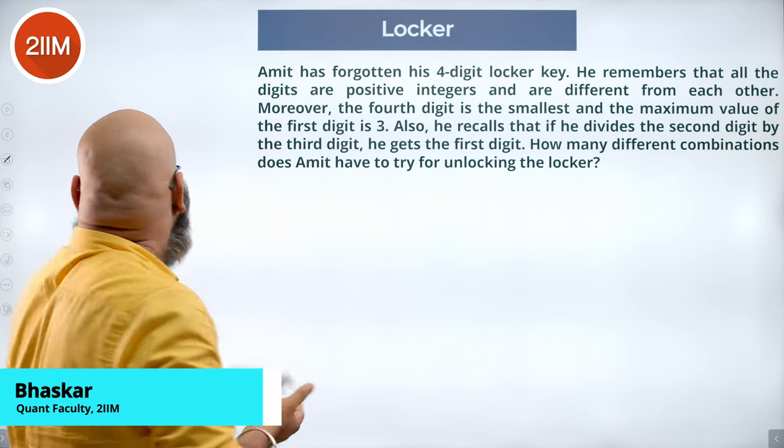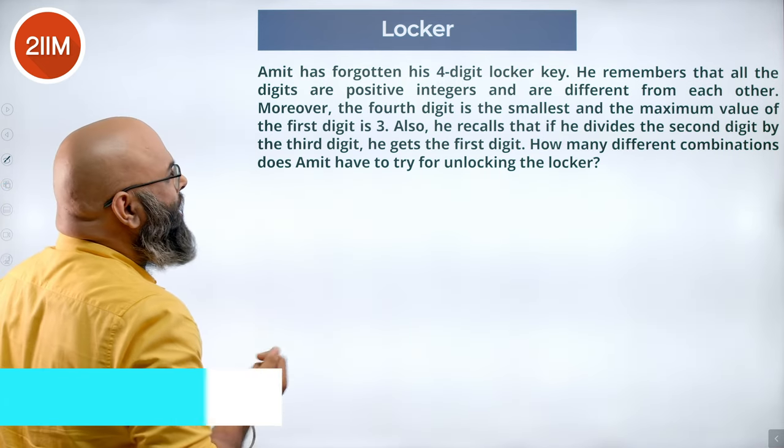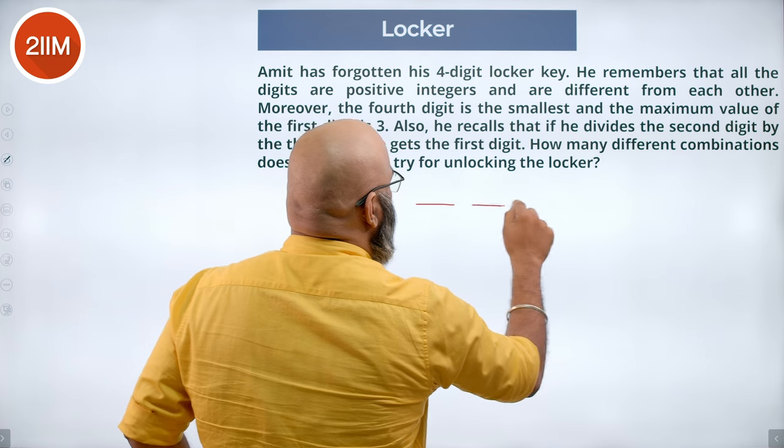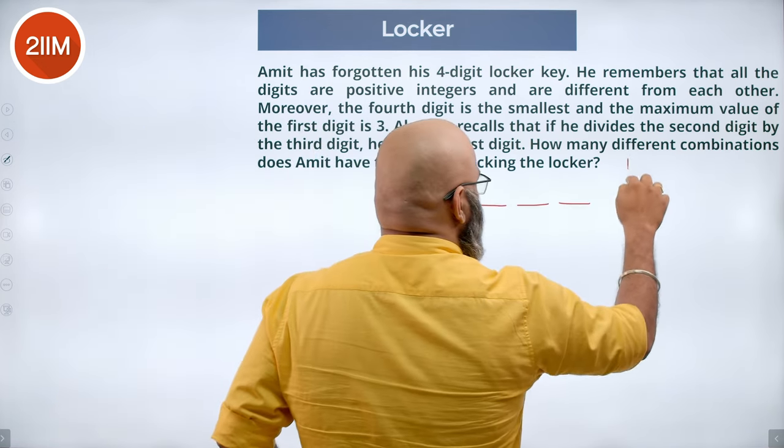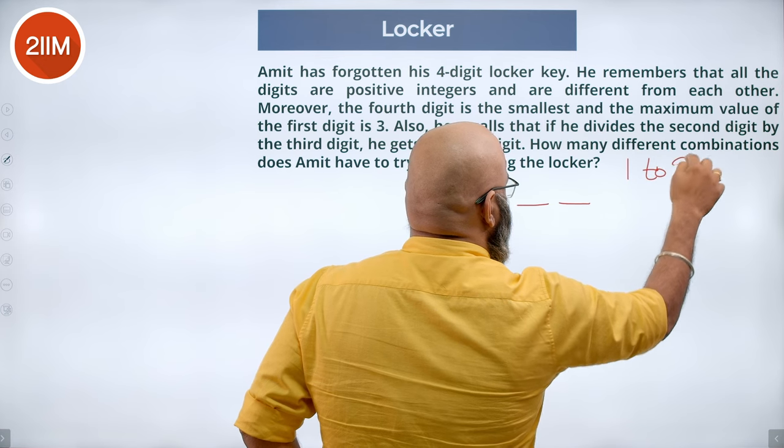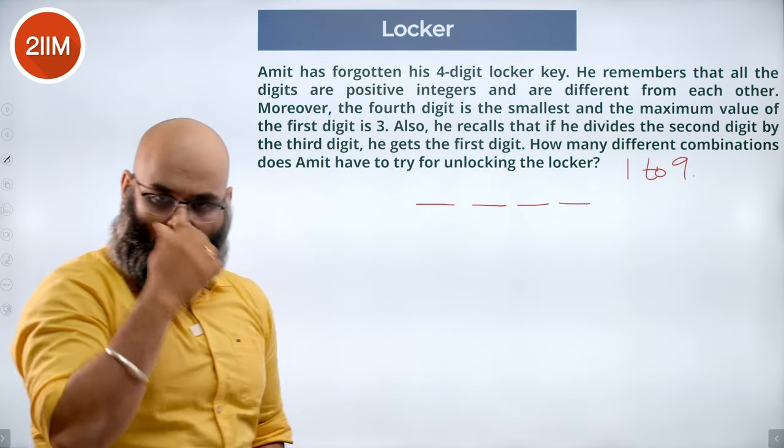Now we have a bunch of data from here which we can use. The first thing that it says is it's a four digit locker key and all of them are different and they all are positive.